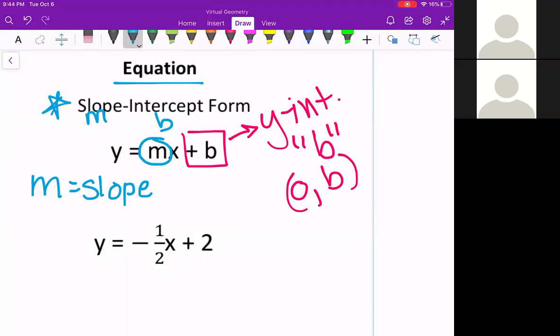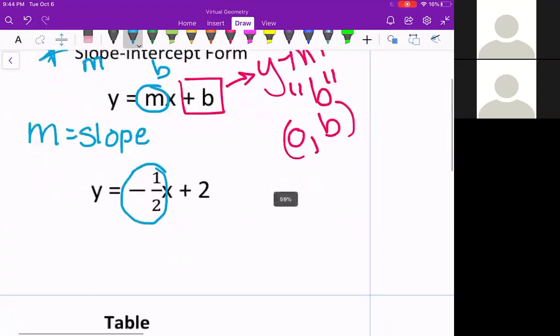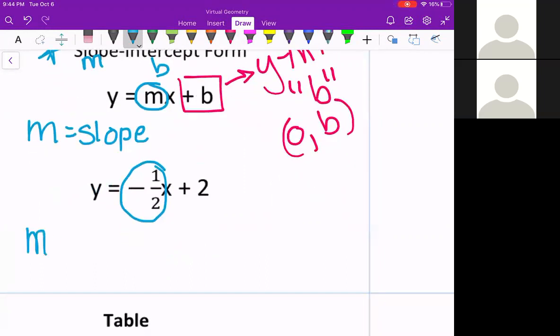So if we go down to the example below, the m is the coefficient of x. So in this case, that is my negative one half. And because this is negative, that means your graph, when we actually plot and use this slope, that means you will be going down because it's negative. And then the denominator of our fraction, going to the right.